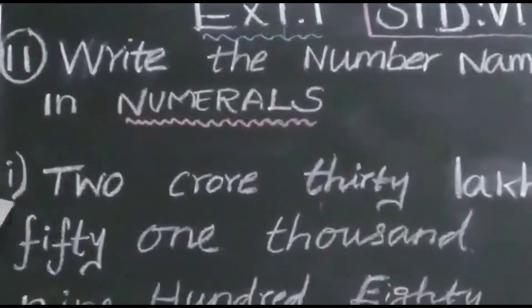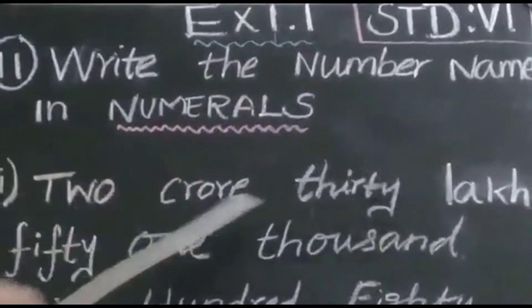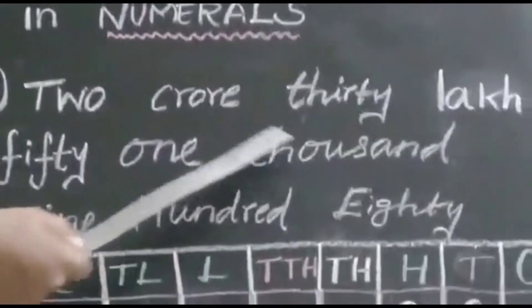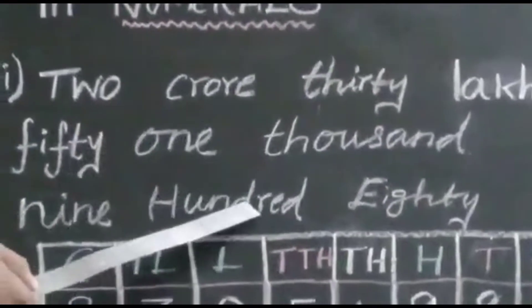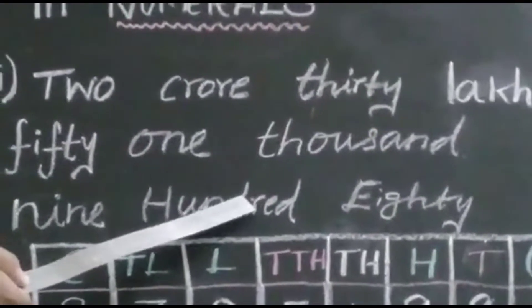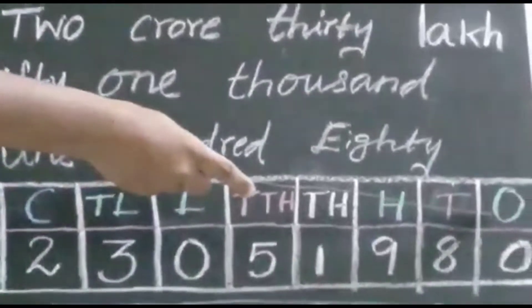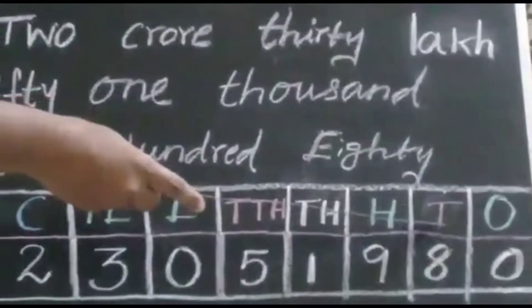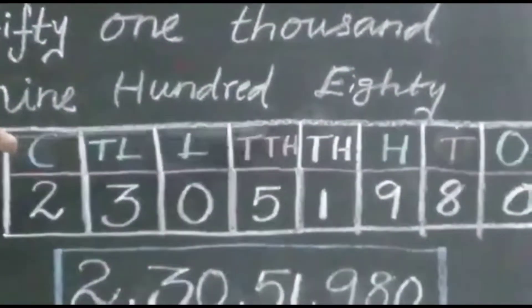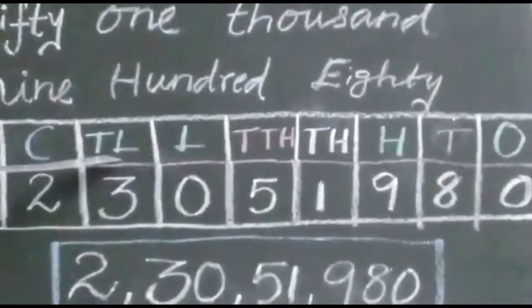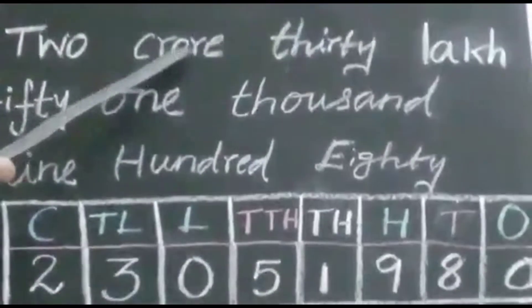What is the first question? 2 crore 30 lakhs 51,980. This is the Indian number system. In the Indian number system, the place values are: 1, 10, 100, 1000, 10,000, lakh, 10 lakhs, crore.